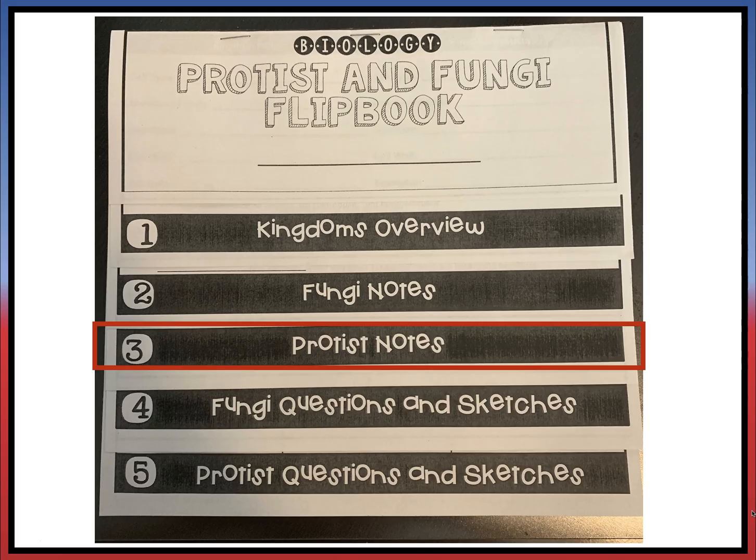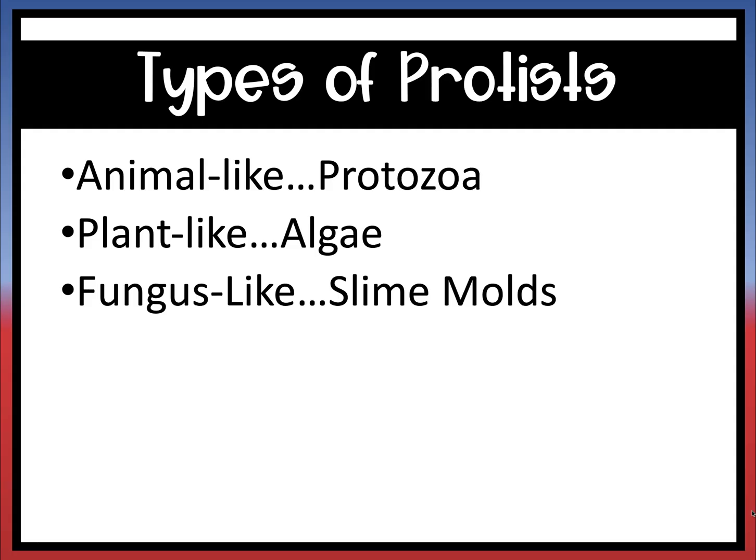Now we will move to tab three, the protist notes section of your flipbook. There are three types of protists: animal-like, which are also known as protozoa; plant-like, which are also known as algae; and fungus-like, which are also known as slime molds.